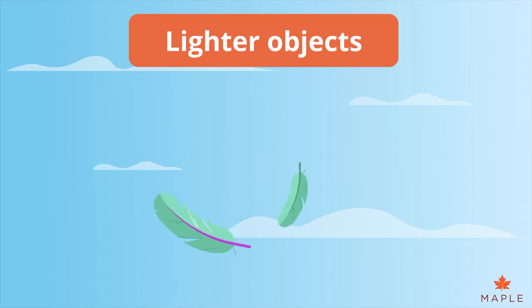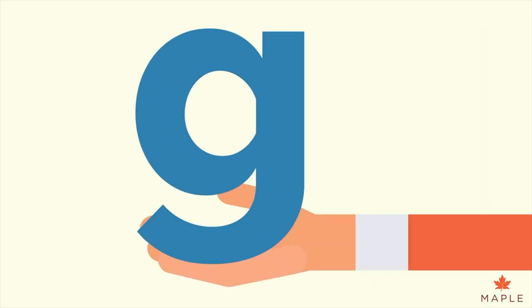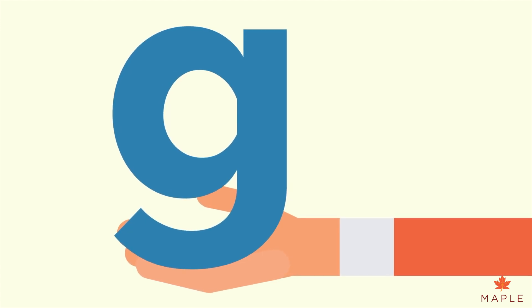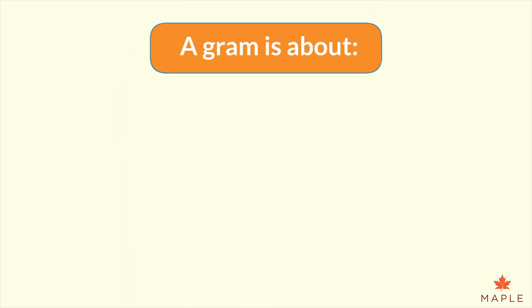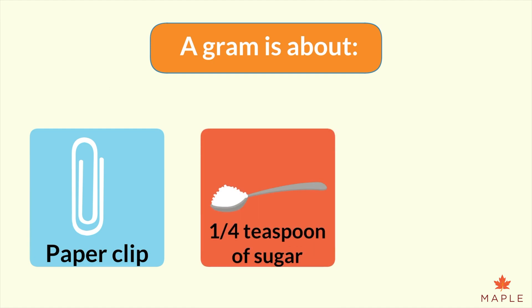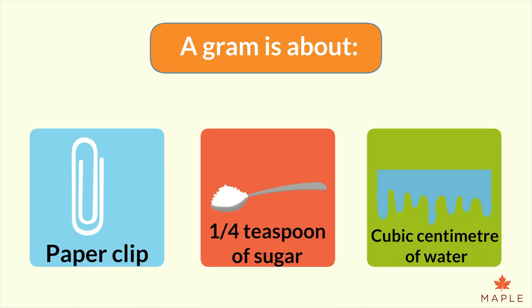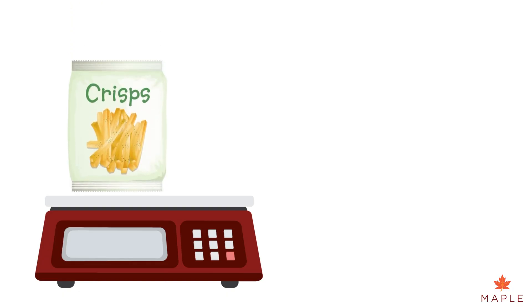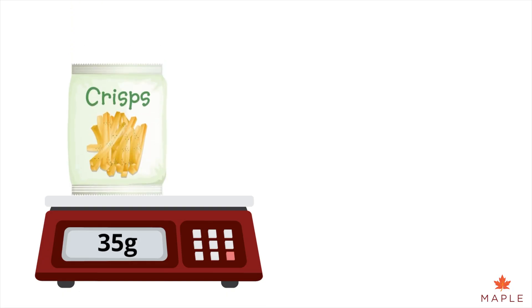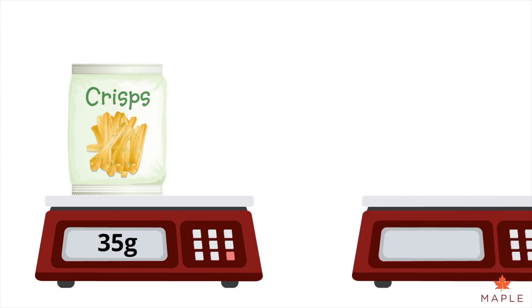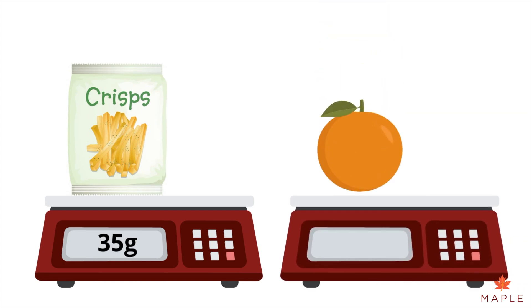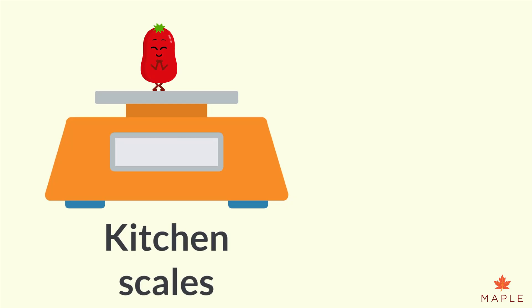Let's start by looking at items that are very light and weigh around one gram — we use the letter G to show this. A gram is about a paper clip, a quarter of a teaspoon of sugar, or a cubic centimetre of water. A packet of crisps would be around 35 grams, but an orange is significantly heavier at around 200 grams. Kitchen scales are handy to measure these ranges.